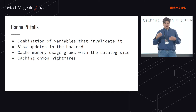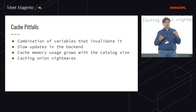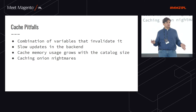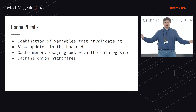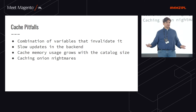Usually you need to keep layers of cache very simple — only one level of cache. You shouldn't cache separately product prices, separately product data, and then have a full-page cache on top. It makes things inefficient.